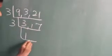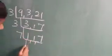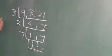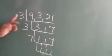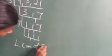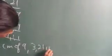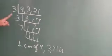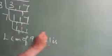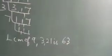Continuing the division: 3 times 1, 1, put 7 as it is. So we have 7, 1, 1, 1. Now multiply these numbers together: 3 threes are 9, and 9 sevens are 63. So the LCM of 9, 3, and 21 is 63.